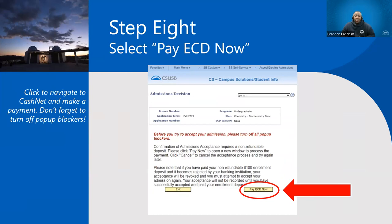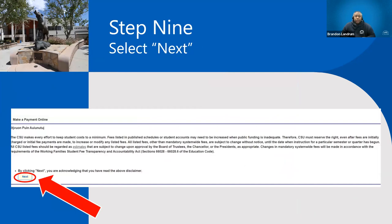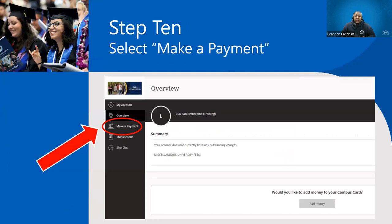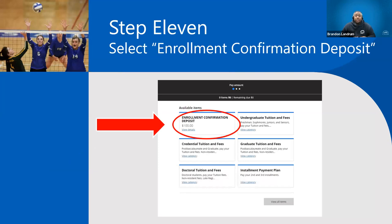It will take you to step nine — read through all the information and click Next. Step ten is the make-a-payment window. At step eleven, it's going to ask you to select the enrollment confirmation deposit. It's on the top left of the screen, but if you don't see it there, scroll to the bottom right where it says 'View All Items' and click that to find the enrollment confirmation deposit.